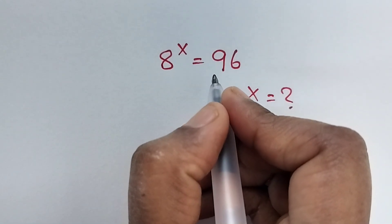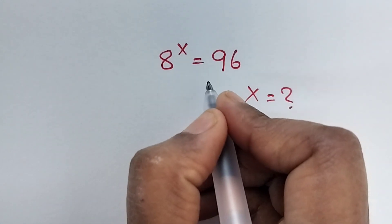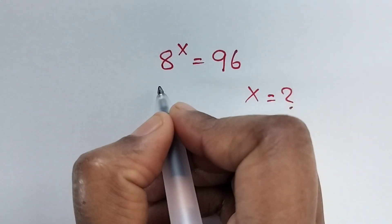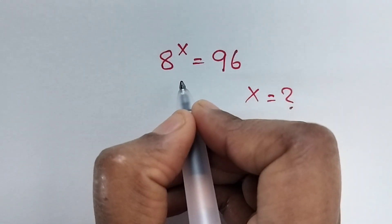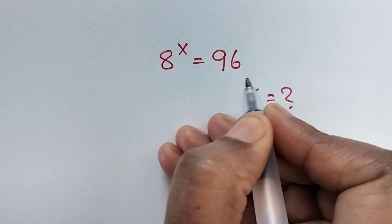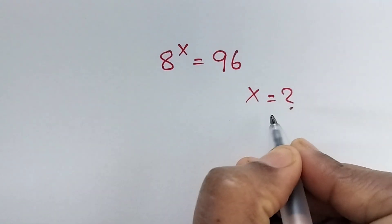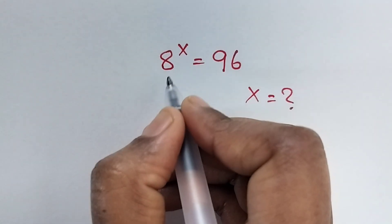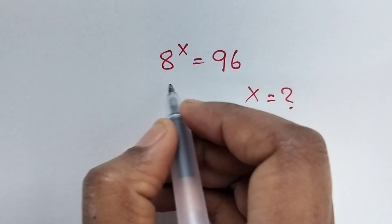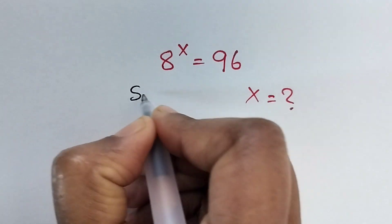Hi everyone, welcome back to our channel. Here we have one problem: 8 to the power of x is equal to 96. In this problem we need to find the value of x. So how do we solve this problem? Let's see.